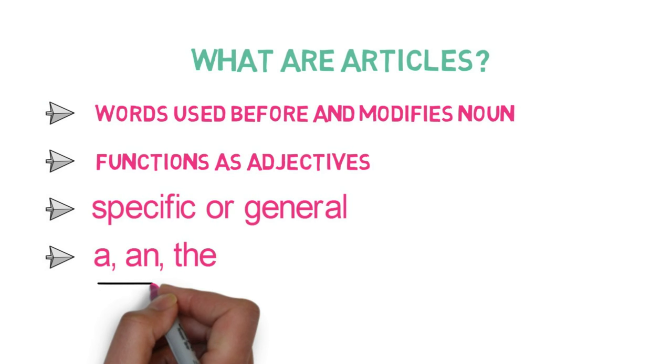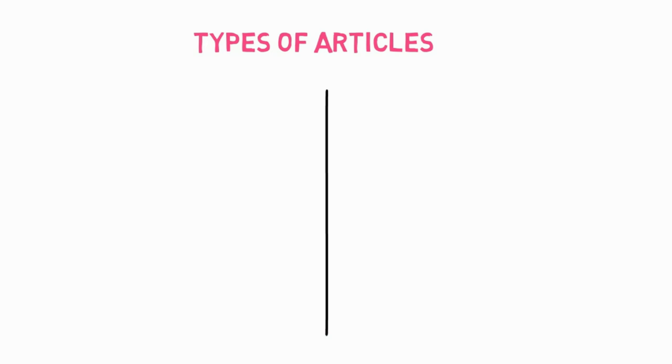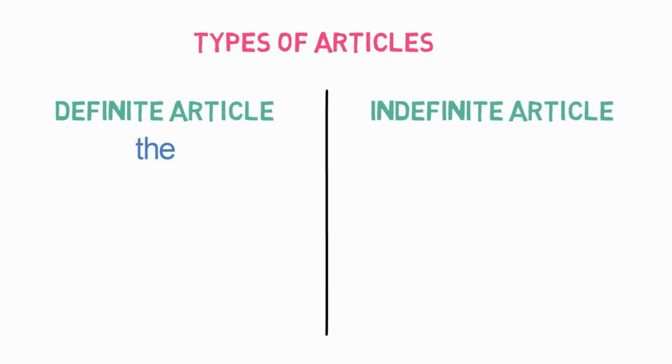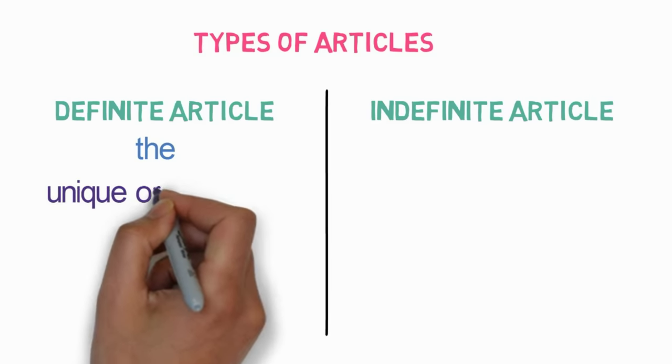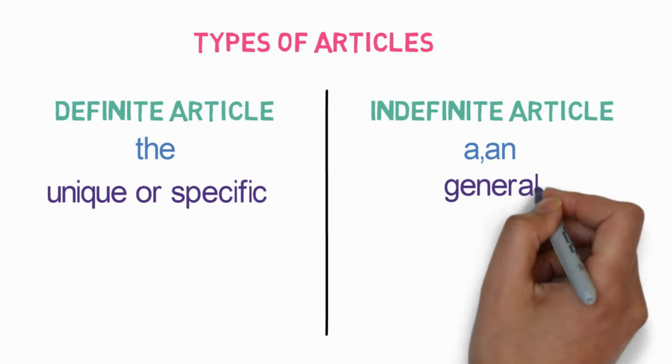These articles are categorized into different types based on their usage. Articles are divided into two types: definite articles and indefinite articles. The article 'the' is a definite article, as it shows uniqueness or something specific. The articles 'a' and 'an' are indefinite articles, as they don't show any uniqueness or something specific. Instead, they indicate that the thing is being said in general.